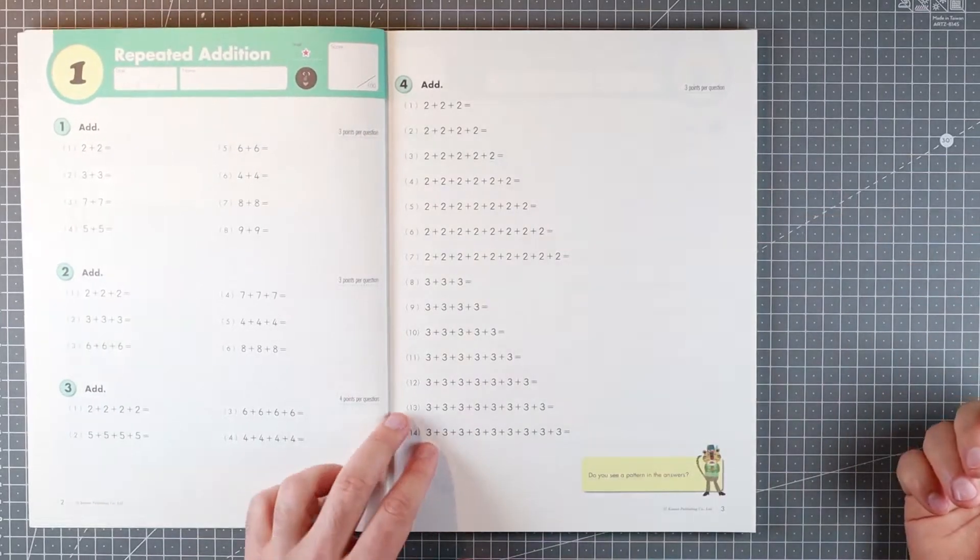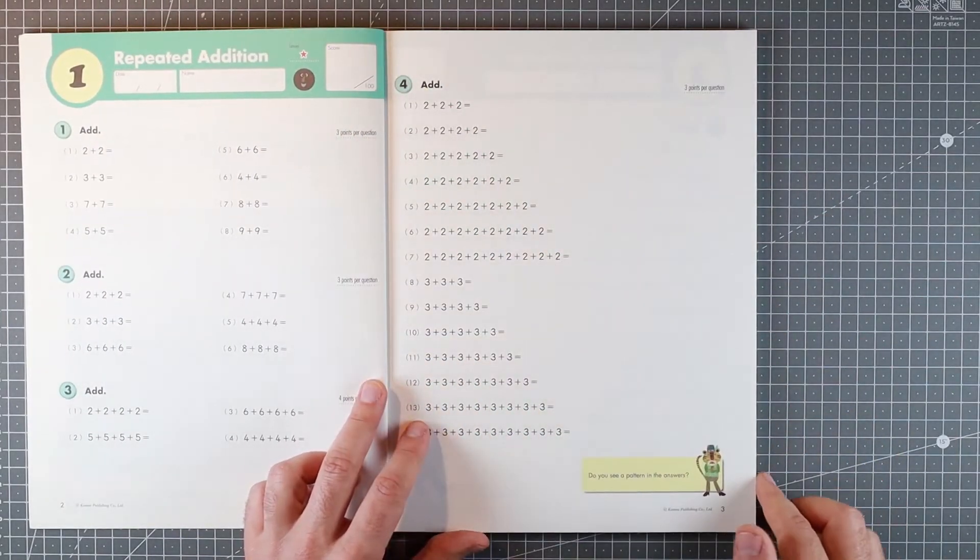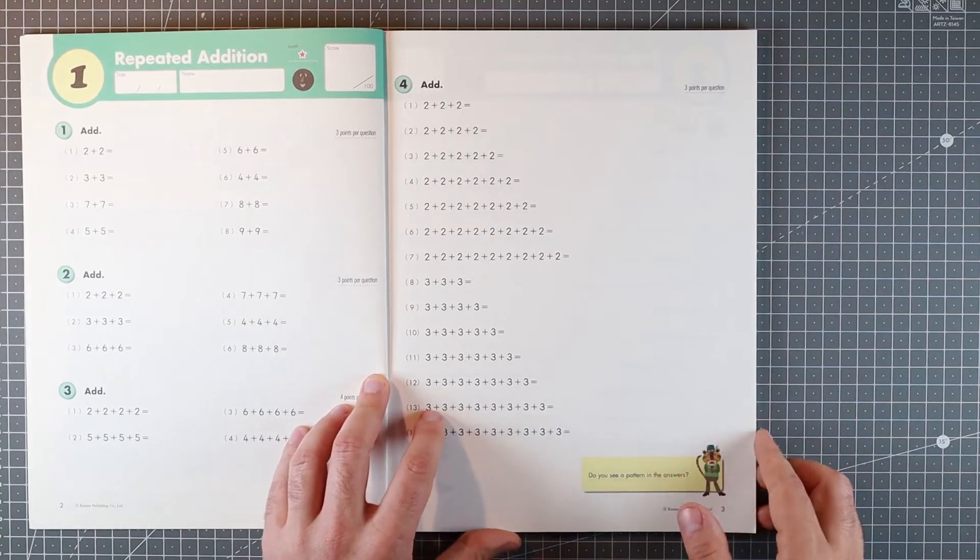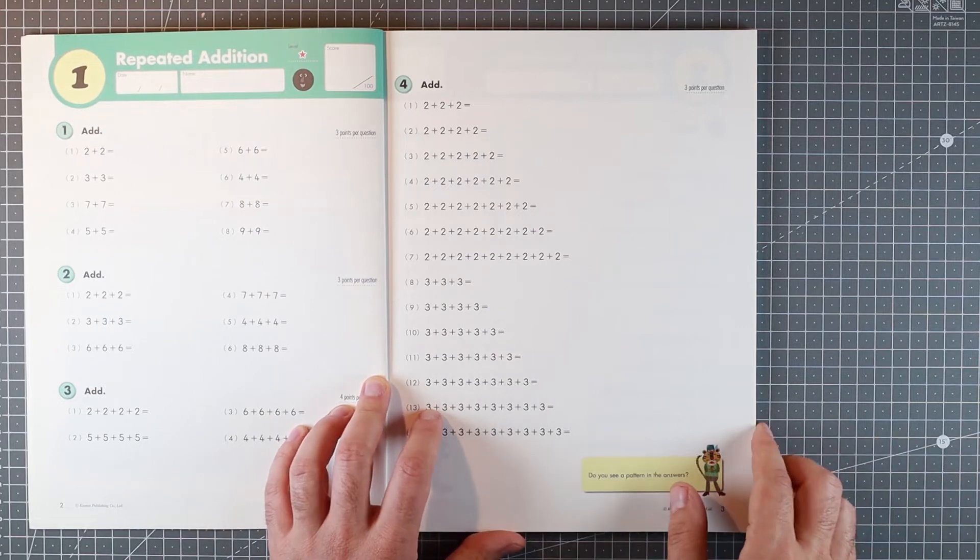It's worth timing these if you have a timer. They do give you scores and they do give you the points per question. If you want to create a little chart of your kid's progression that might be helpful, there isn't one included.